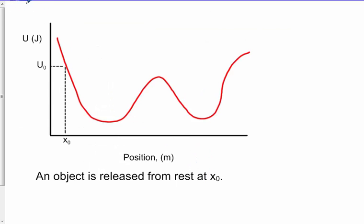To illustrate this with potential energy graphs, here I have potential energy on the vertical axis and position on the horizontal axis, in meters and joules. Here I have an object at rest at x-initial, and it has a certain amount of potential energy.